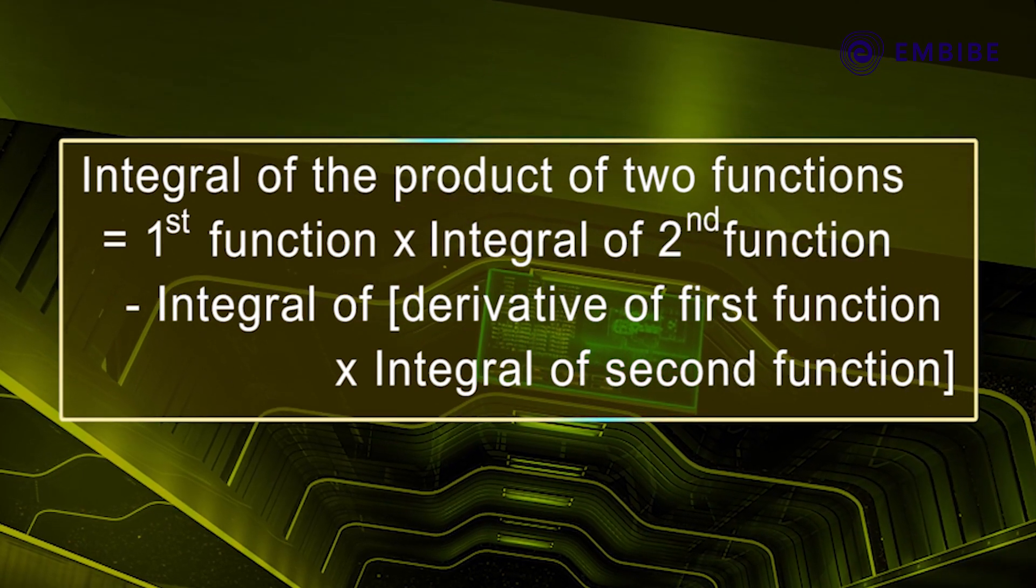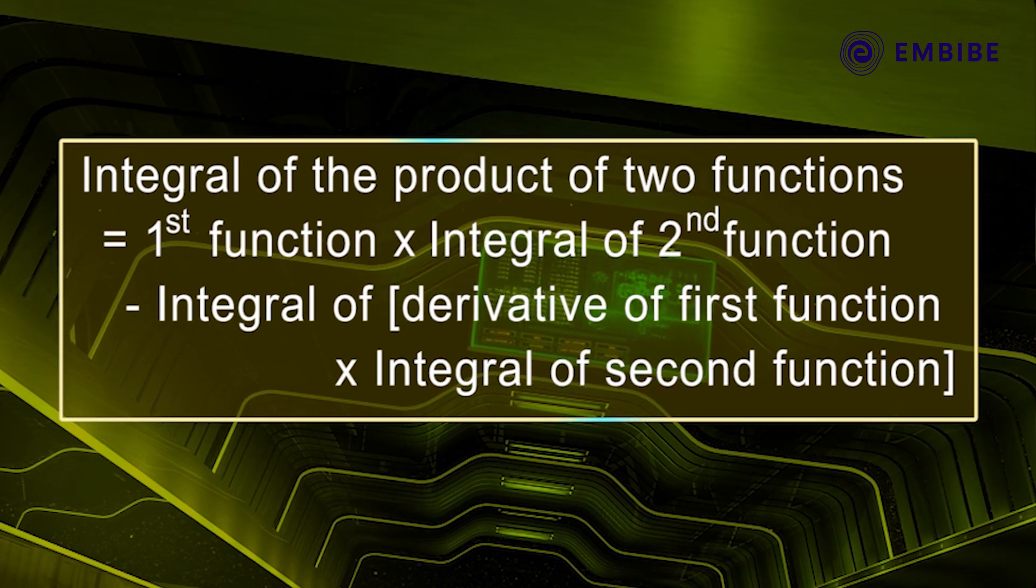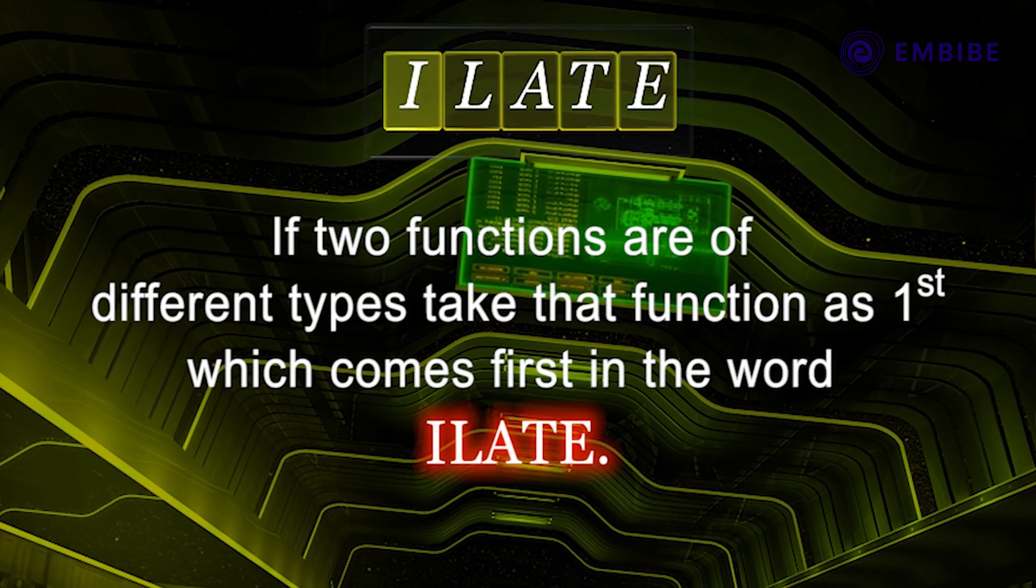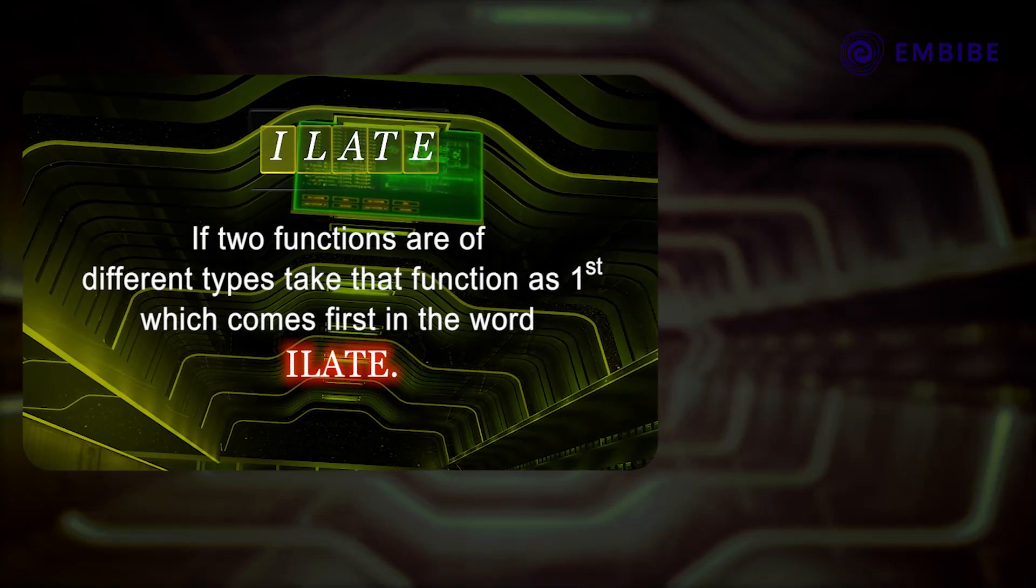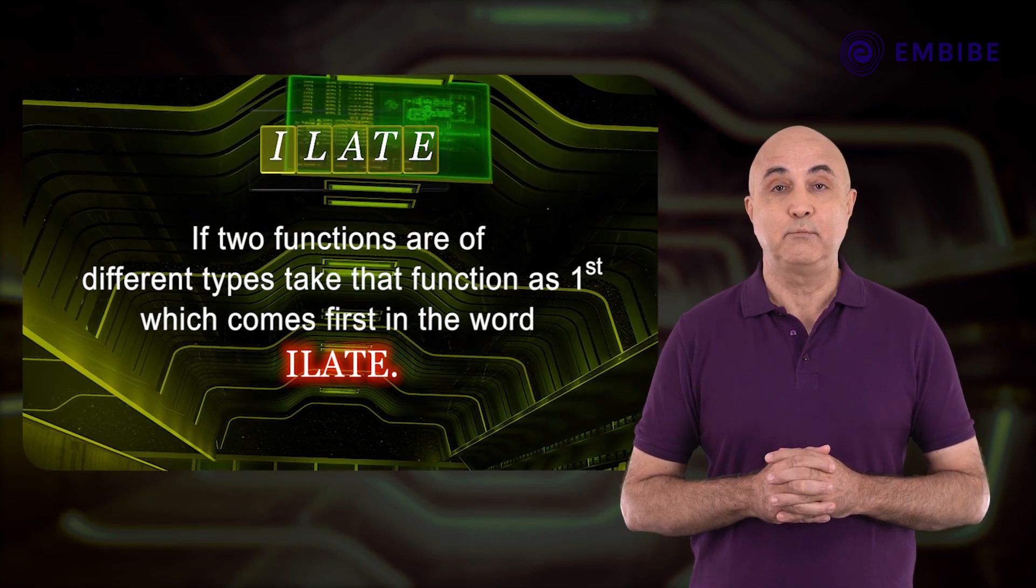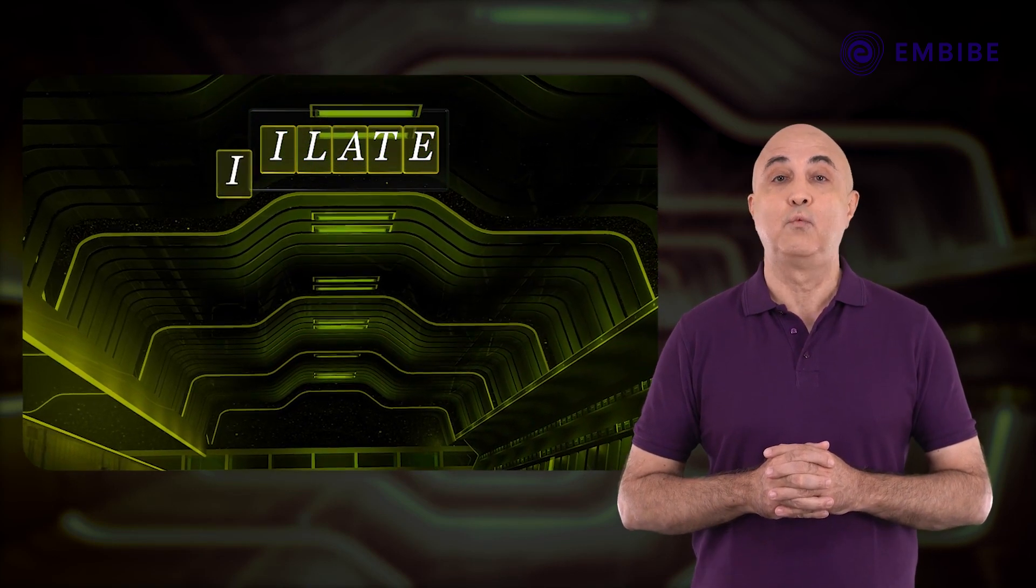In finding integral by this method, choice of first and second function is essential. In this, the I-Late rule is helpful in the choice of functions first and second. If two functions of different types take the function as first, which comes first in the word I-Late.